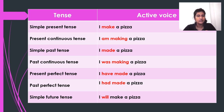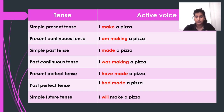The second one is present continuous tense, which is used when an action is happening right now, frequently, and may continue into the future. We use 'am,' 'is,' or 'are' with the verb in present participle form. Since the subject is 'I,' we use 'am.' So in present continuous tense: 'I am making a pizza.' The verb is in present participle form — making.